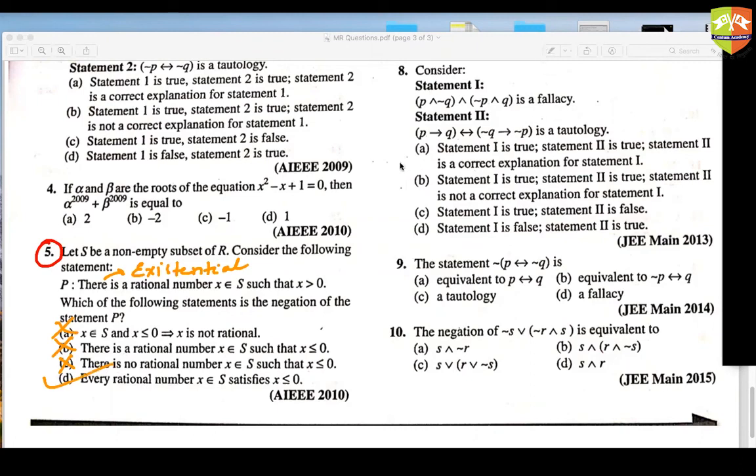Now every rational number present in S is less than equal to 0 is a negation of this. So D is the correct answer. Oh yeah. Niyati gave the right answer. So this is how you have to deal with this kind of problem. And let me tell you one problem.